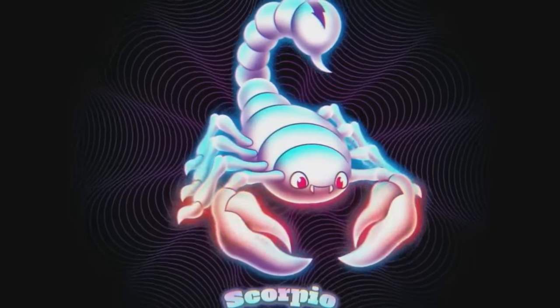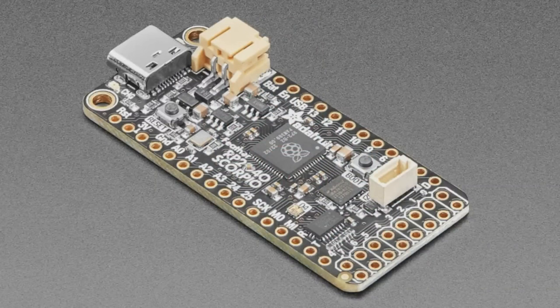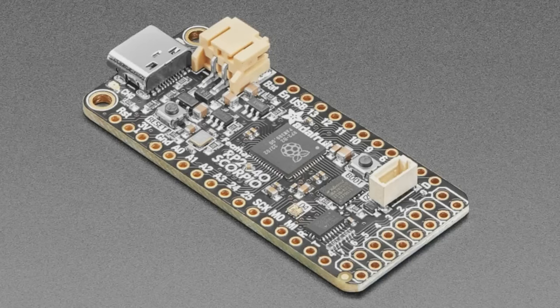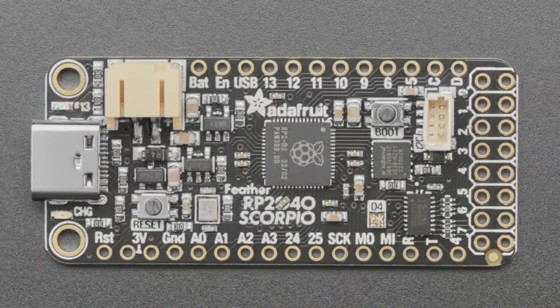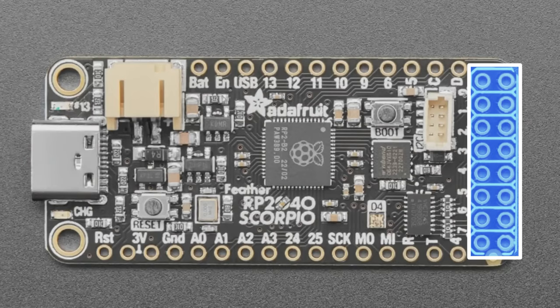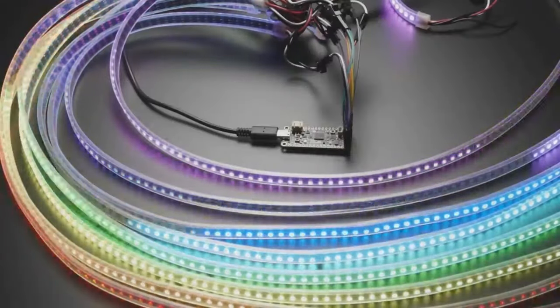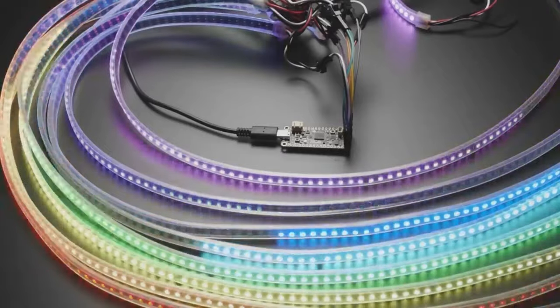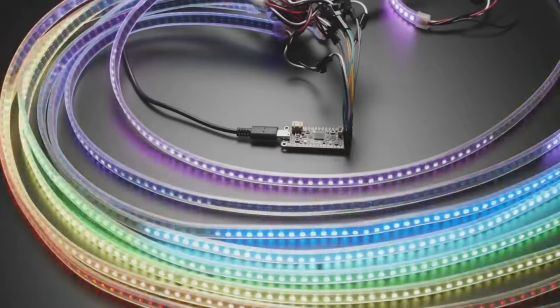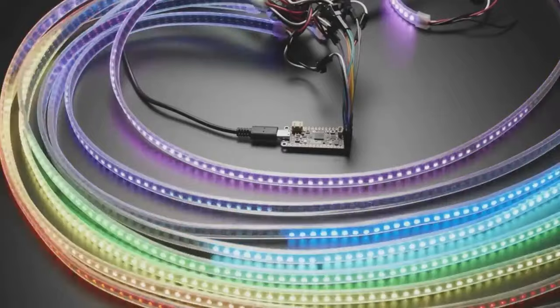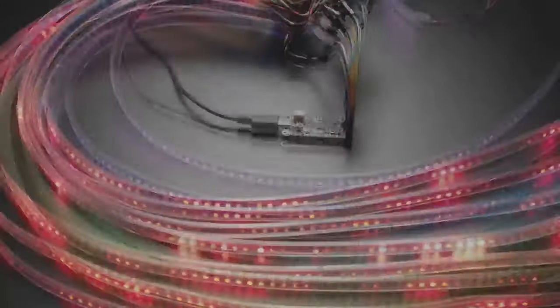From Adafruit comes a new board called the Feather Scorpio. This is an RP2040-based microcontroller with all the usual feather bells and whistles, but with a special 2x8 header on the right side of the board. This board and the header make use of the RP2040's PIO mode, which allows for DMA control of up to 8 NeoPixel channels simultaneously.